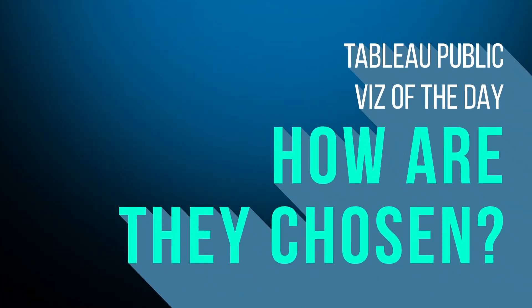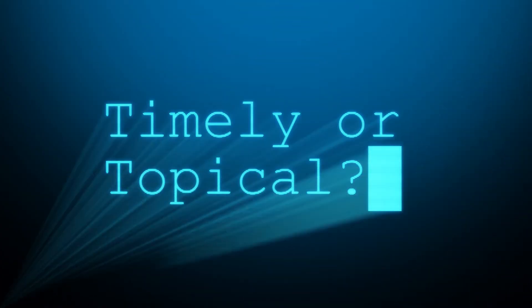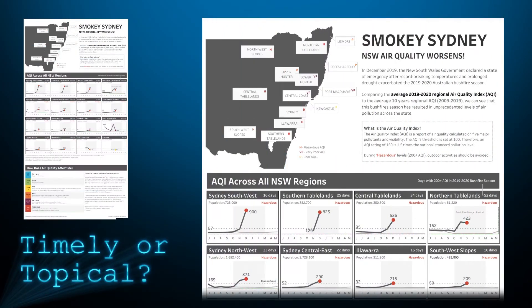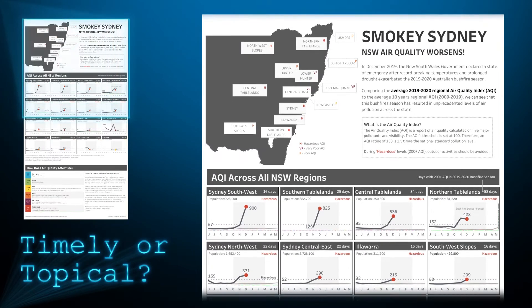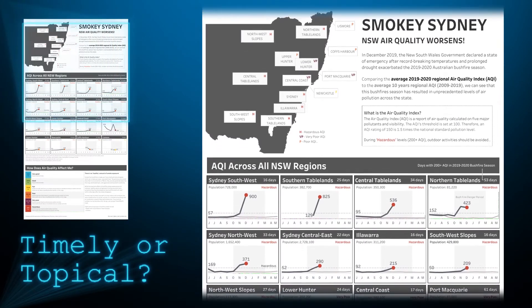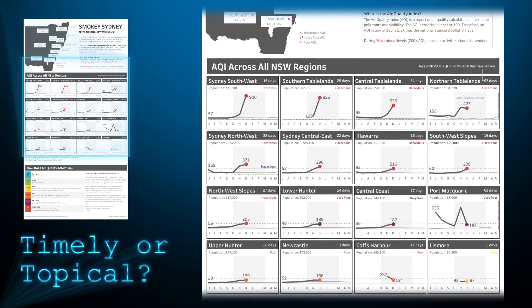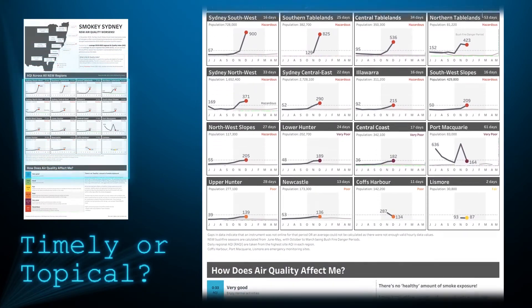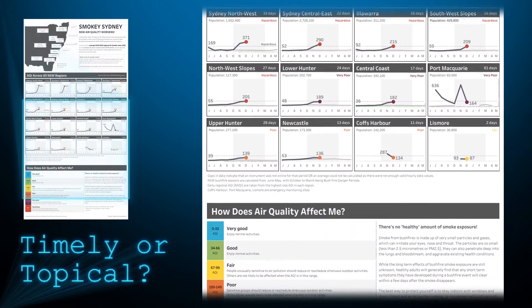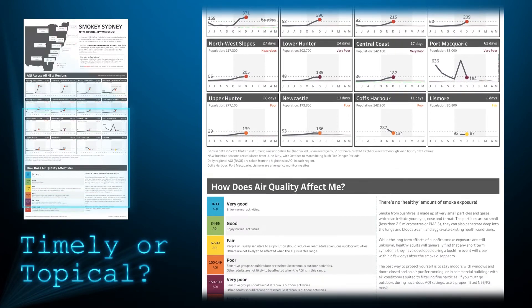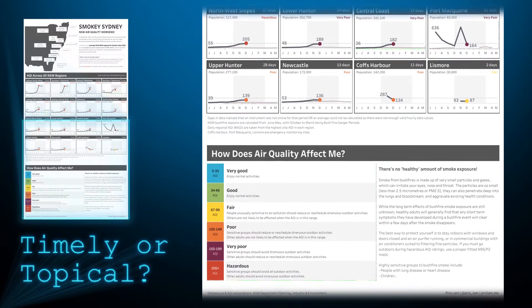So what criteria do Viz of the Days have in common? These are the things I've noticed that past Viz of the Days have that have probably helped them get chosen. First off, does the viz contribute to a relatable, trending, or newsworthy topic from around the world? This can be holidays, elections, and data pertaining to a news story or topics that are trending in the BI community. A recent example is this one looking at the air quality in New South Wales, Australia during the bushfires.